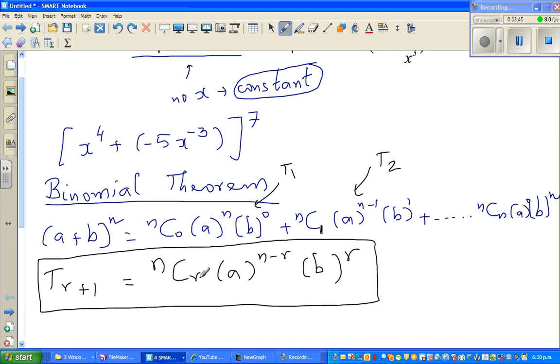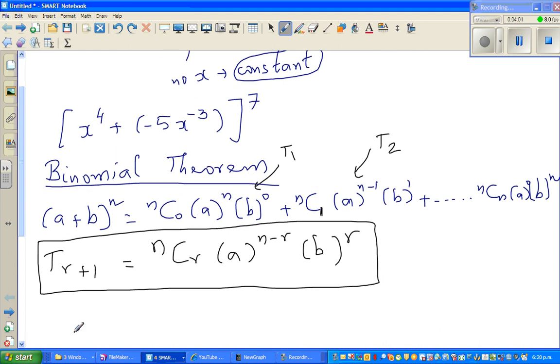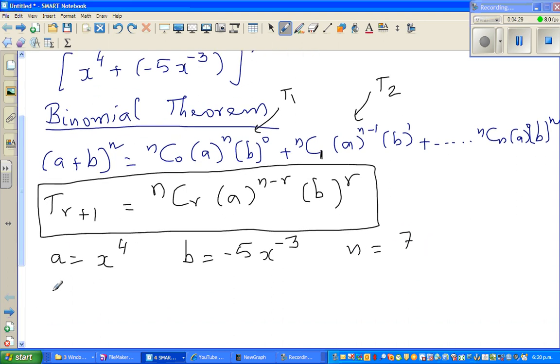And this is nothing but this minus this. As I told you, n minus 0 is n, n minus 1 is n minus 1. So the exponent of a is this, take away this. And the exponent of the second term, which is b, is nothing but this. So let us compare this general form with the example. So can I compare a with what? Compare a with x to the power 4. And you can compare b with minus 5x to the power minus 3. And your 7 can be compared with n.